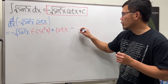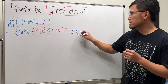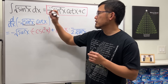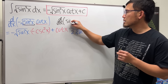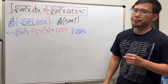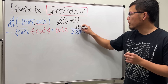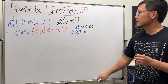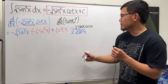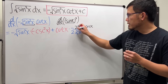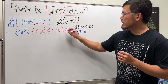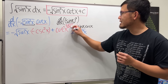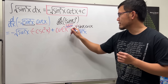Continuing, we add the second function times the derivative of the first. We have a negative and then the square root, so it's one over two times square root of sine squared x. Then use the chain rule: bring the two to the front, and the derivative of sine is cosine x. Now cotangent x is the same as cosine x over sine x, so the sine x terms cancel nicely.